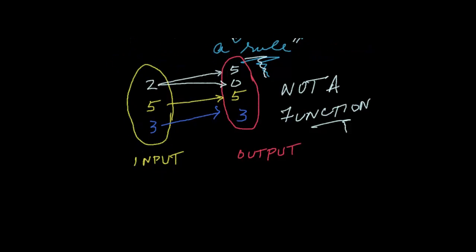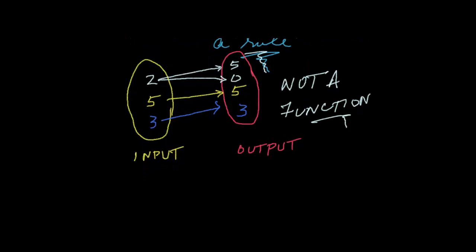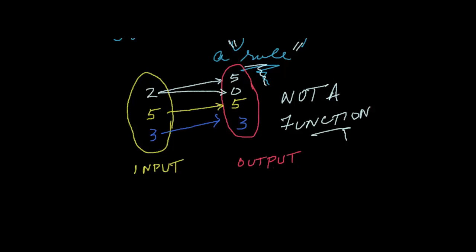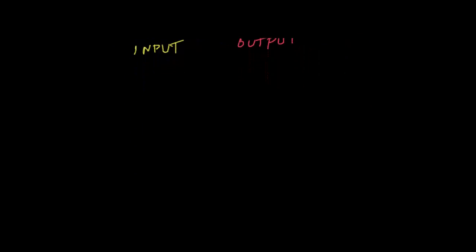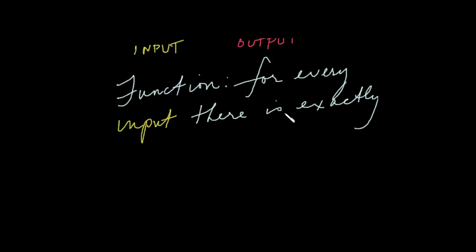Now, one last thing, and then we'll pick up on this more precisely later. We're going to state the rule for a function in more precise terms. These are your input elements and those are your output elements. What we can say about a function in terms of input and output — if it's a function, we're talking about following the rules — we can say it this way: for every input element, there is exactly one output.